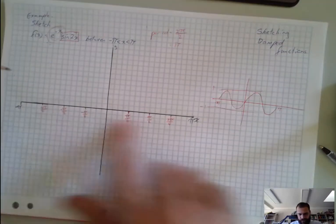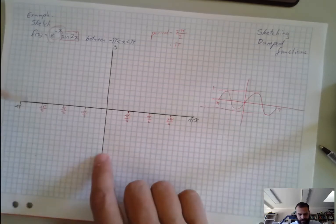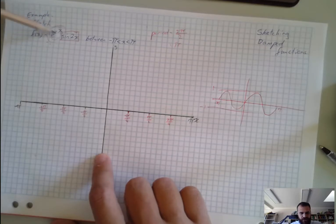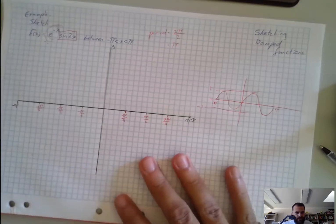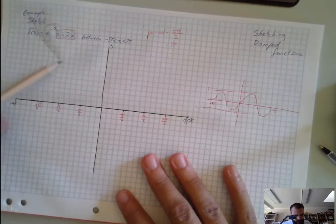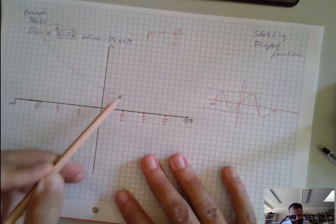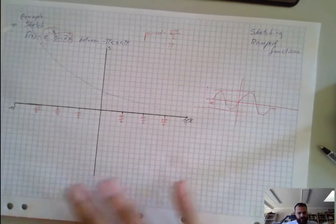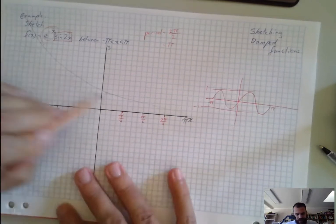Now that we've got this nice little axis, we just look at e^(−x) and sketch that in. I'm just going to sketch it in pencil so you can see what it looks like. e^(−x) is a decay curve that looks like that. There's e^(−x).